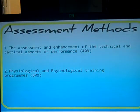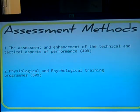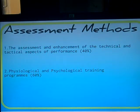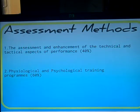Within this module, you will have two different assessments. For the first assessment, you are required to design a system that will assess sports performance technically or tactically, and you will then have to interpret the results you have found. For the second assessment, which is worth 60%, you are required to implement a physiological and psychological training programme.